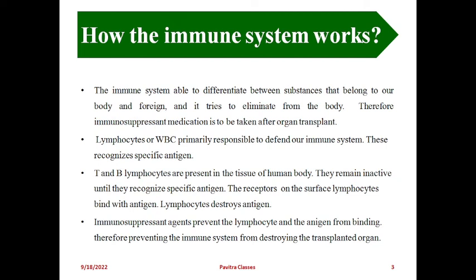Both T and B lymphocytes are present in the tissues of the human body. They remain inactive until they recognize a specific antigen. Whenever they recognize a specific foreign antigen, the receptors on the surface of the lymphocytes bind with the antigen, and the lymphocytes destroy the antigen. Immunosuppressant agents prevent lymphocytes and antigen from binding, thereby preventing the immune system from destroying transplanted organs.